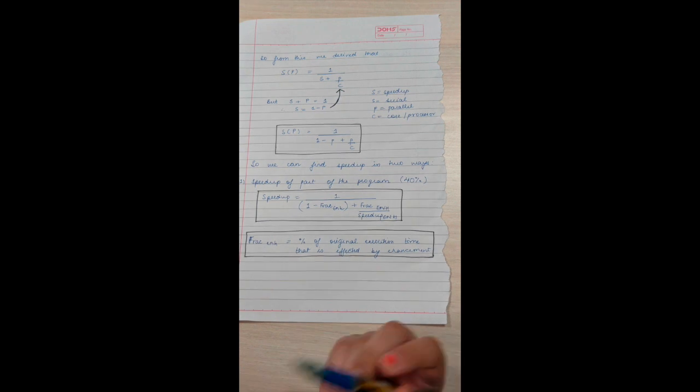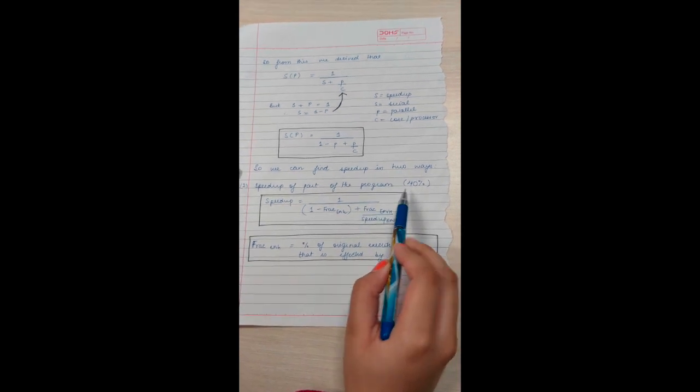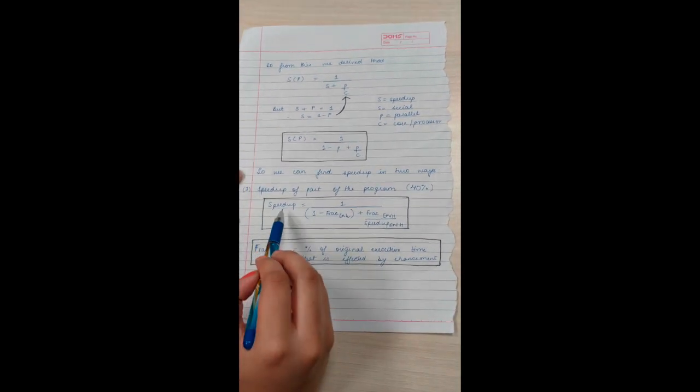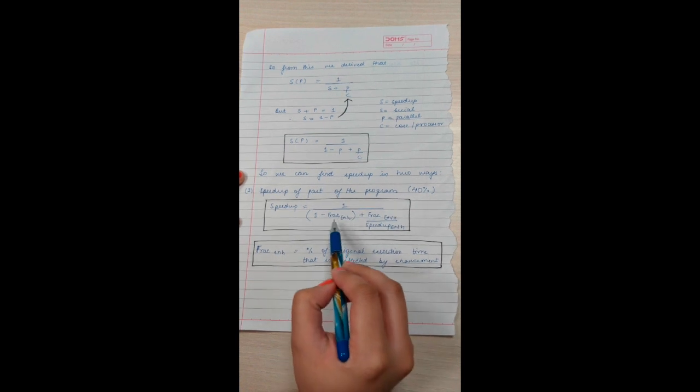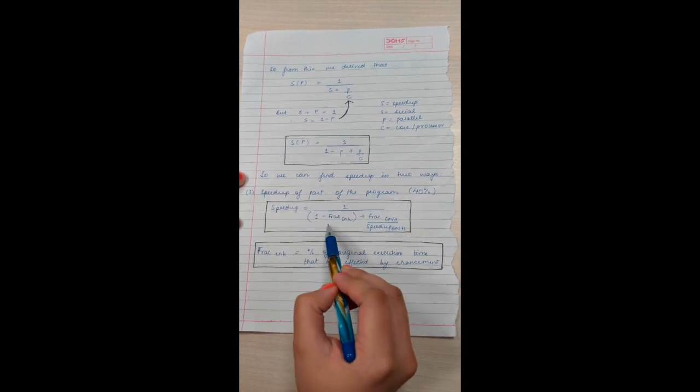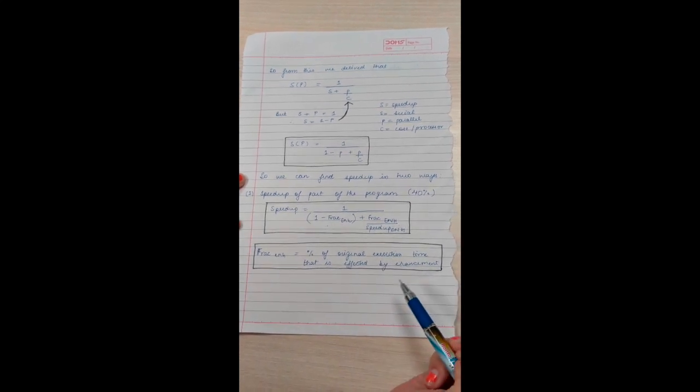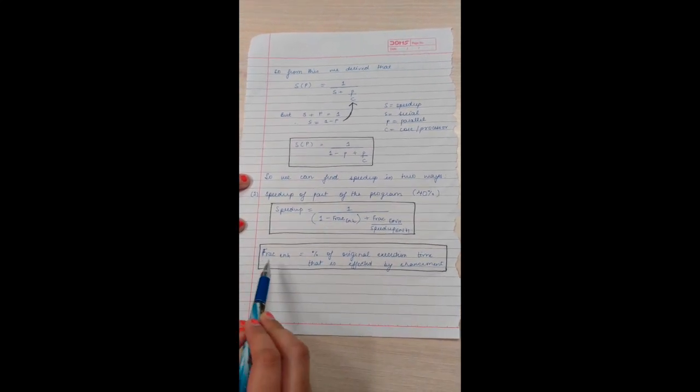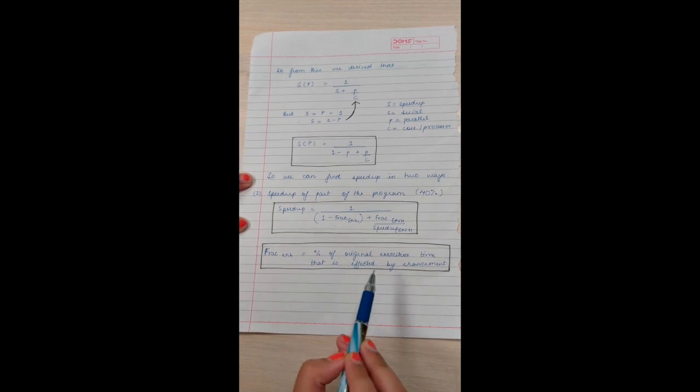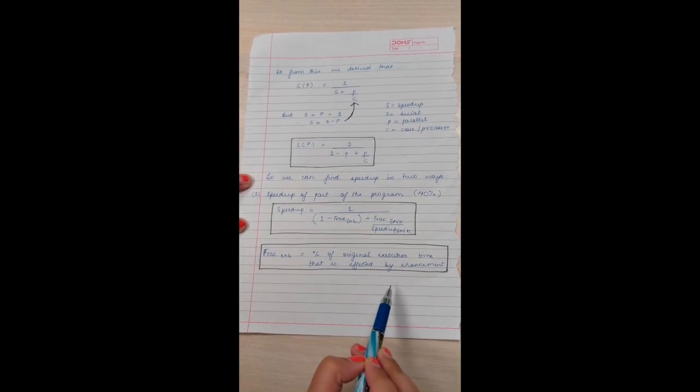Let's say the program was enhanced by a fraction of 40%. So total speed up will be speed up equals 1 divided by ((1 - fraction enhanced) + fraction enhanced / speed up enhanced). Here, we need to remember that fraction enhanced equals percentage of original execution time that is affected by enhancement.